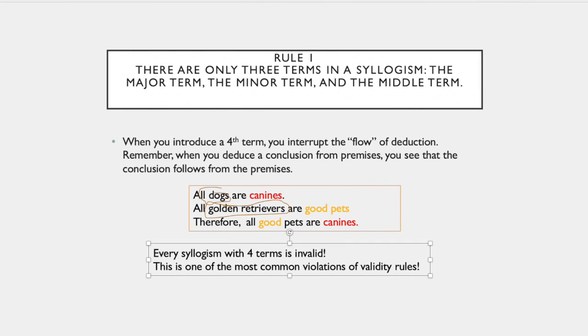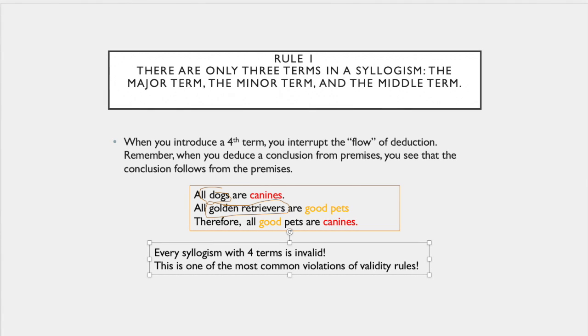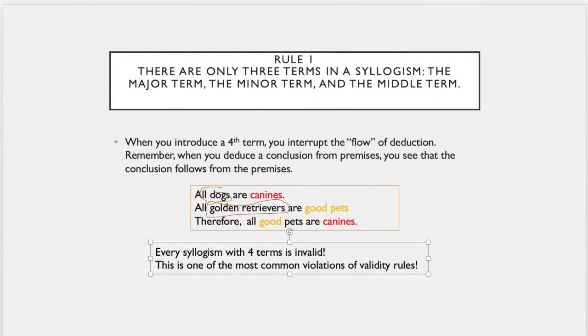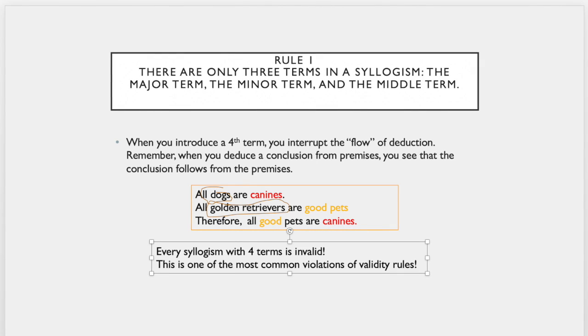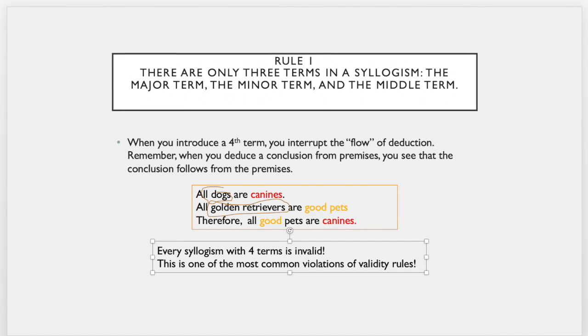There should be only one term shared, meaning there should only be one term that shows up in each of the premises that is shared between them. That is the middle term. Both the major and the minor term only show up once in each of their respective premises. The middle term should show up in both.